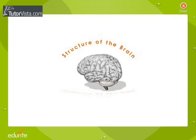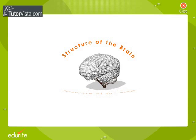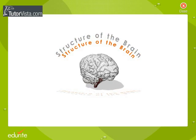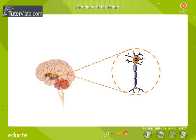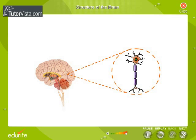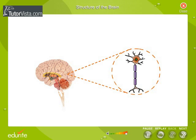Structure of the brain. The brain is an organ of soft nervous tissue contained in our skull, functioning as the coordinating center of sensation and of intellectual and nervous activity.